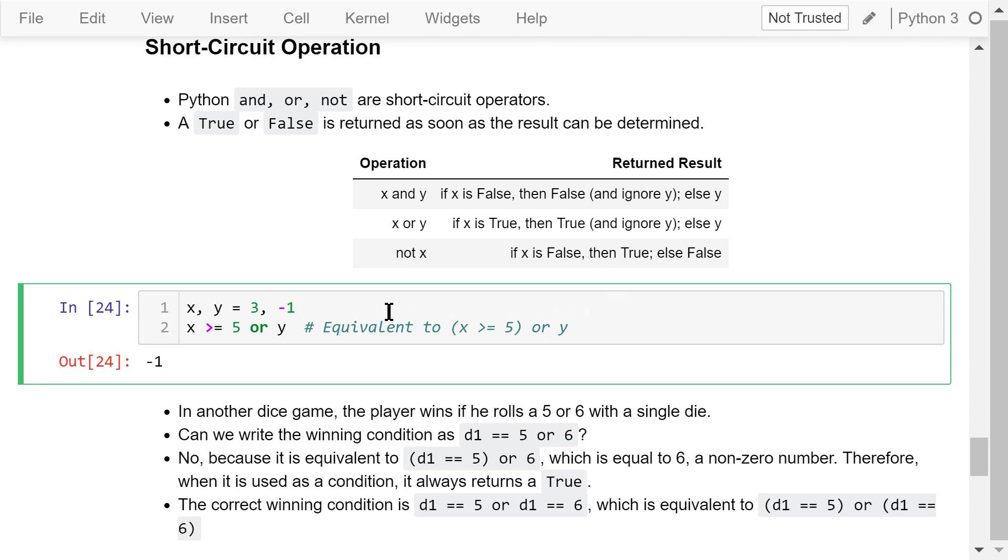Let's see some applications of these short circuit rules. 3 and negative 1 are simultaneously assigned to x and y respectively. This expression is equivalent to this version with parentheses. x is 3. 3 is not greater than or equal to 5, so this part is false. Based on the short circuit rule, we just return y's value, which is negative 1.